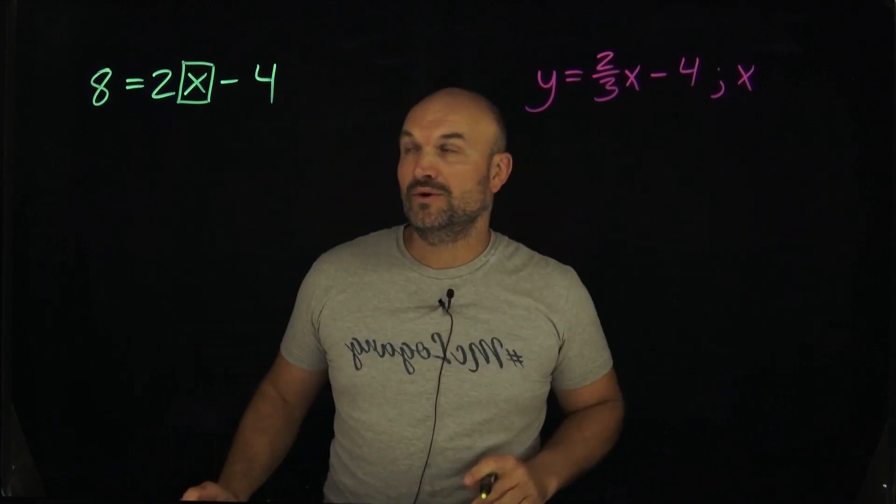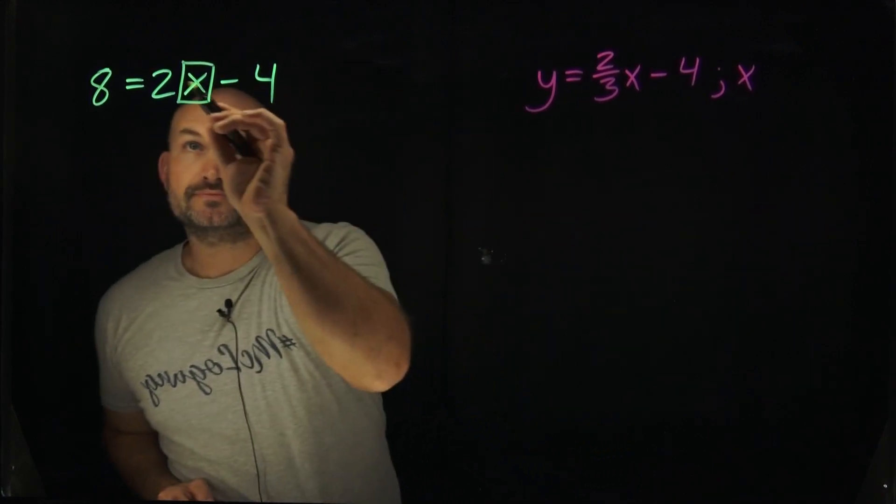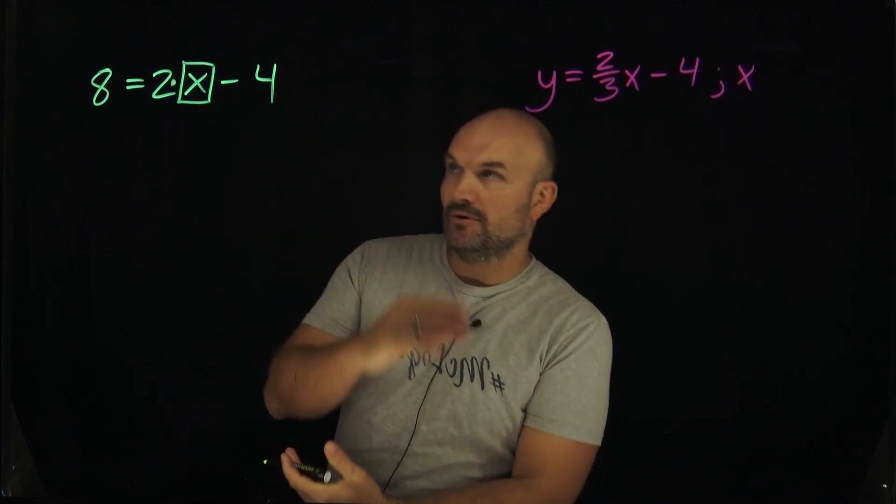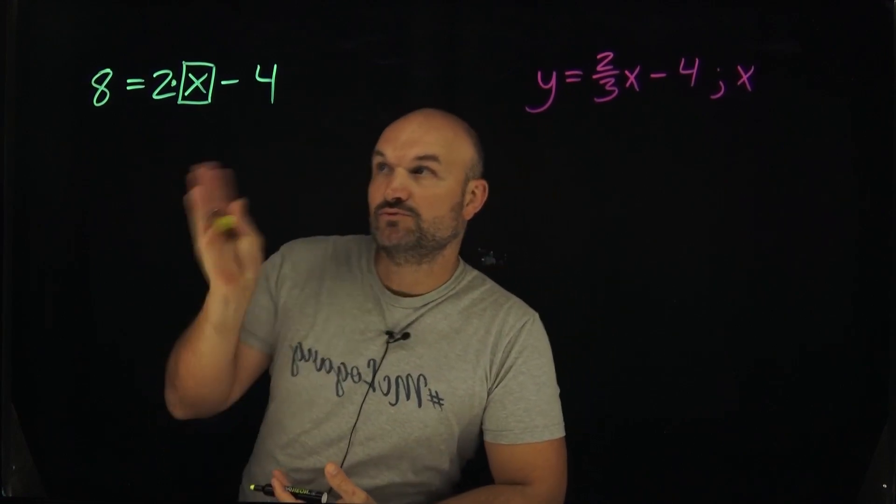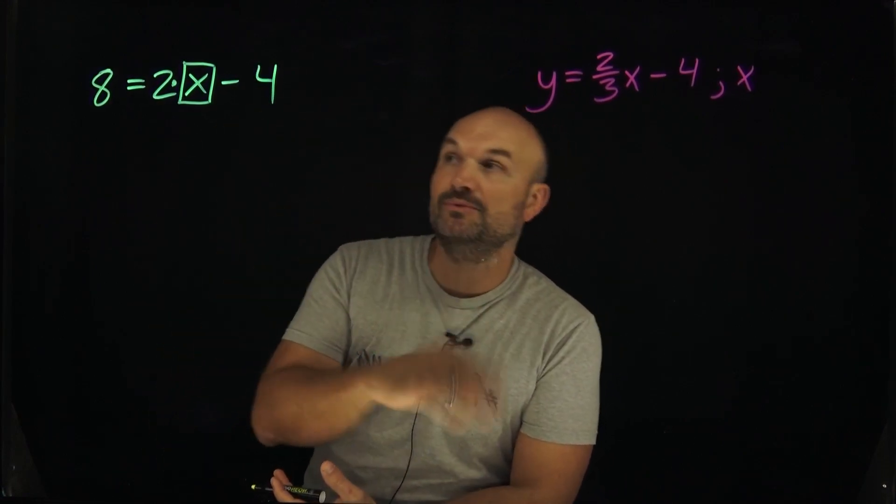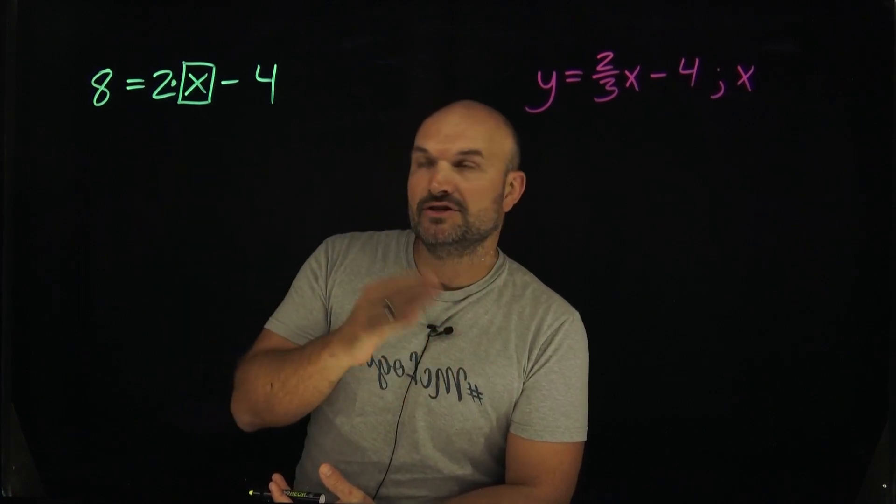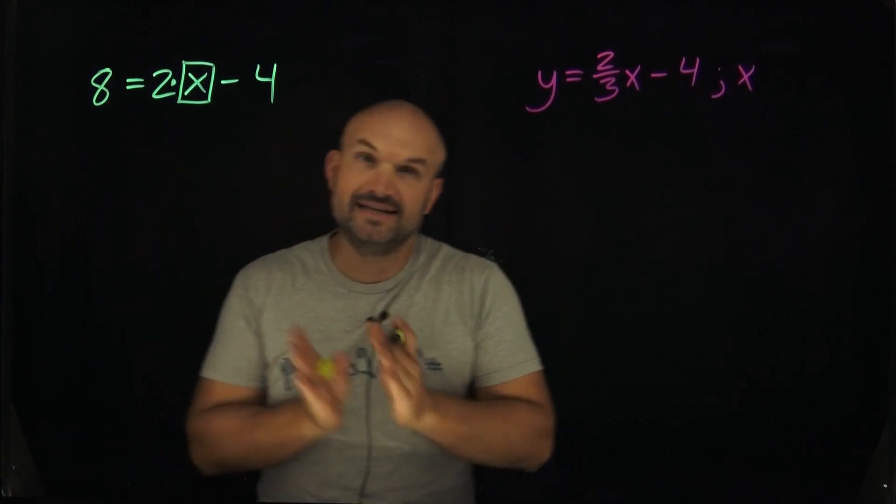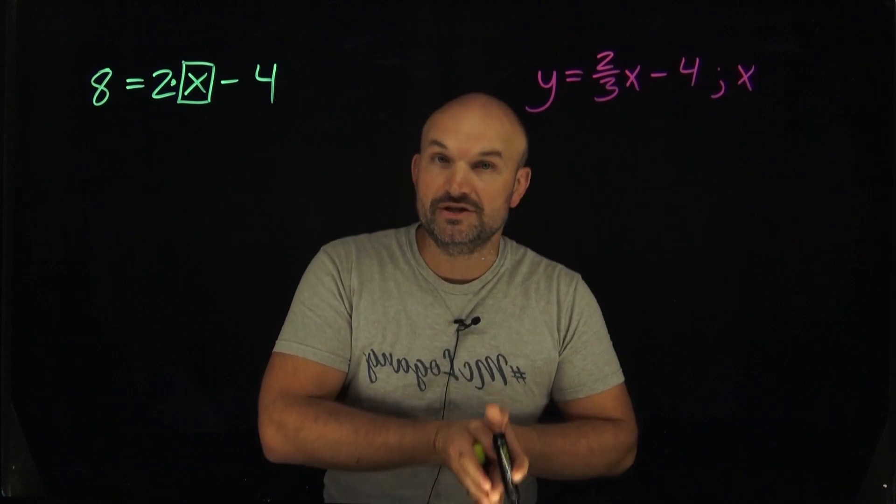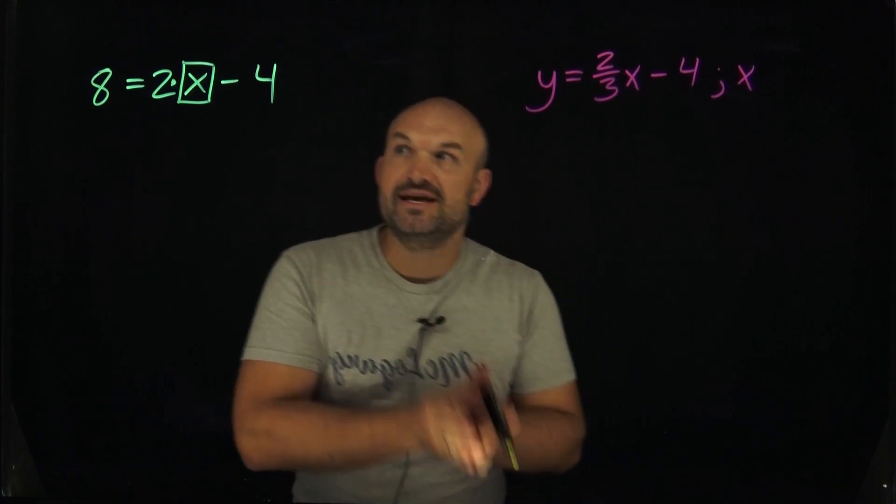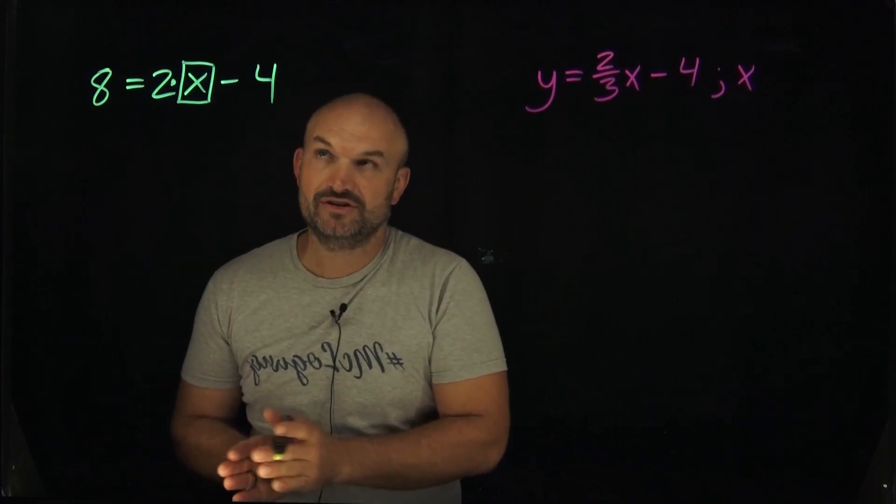Now we need to identify what is being applied to x. I have multiplication and subtraction. But remember, unlike the order of operations, when we're solving an equation we use the reverse order of operations. Instead of doing multiplication/division then addition/subtraction, we're now going to undo addition and subtraction first, then we're going to undo multiplication and division.